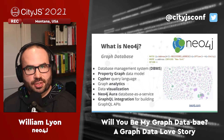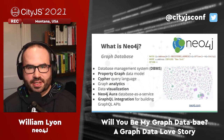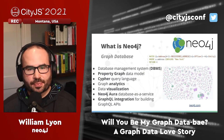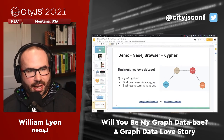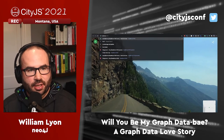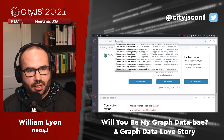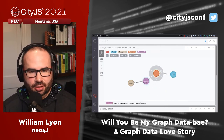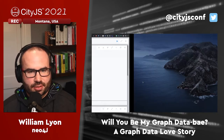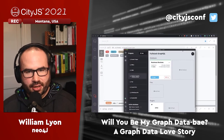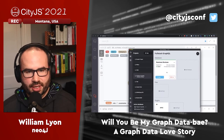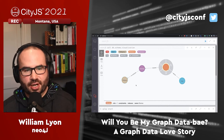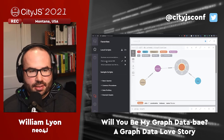Neo4j uses a query language called Cypher. Here's an example of a Cypher query - you can see this ASCII art notation defining graph patterns. This is Neo4j Browser, a kind of query workbench for working with Neo4j. I have a Neo4j instance running locally with a dataset of business reviews: users who write reviews, those reviews connected to businesses, and businesses assigned to categories.